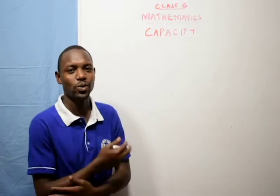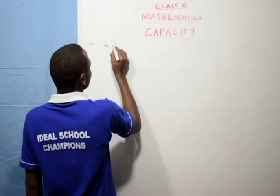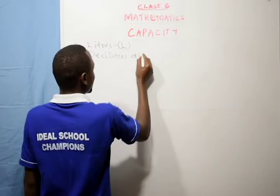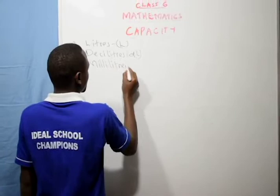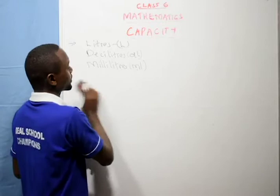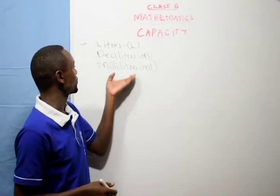The units of capacity are liters, which is given as L. We have deciliters, that is DL. And milliliters, that is ML. Liters are given when measuring large amounts of liquids. Milliliters measure small amounts of liquids.